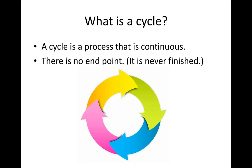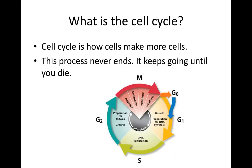So what is a cycle? A cycle is something that is continuous — it's a circle, it's a loop, it never ends. This is really important for the cell cycle because once you reach the end, you're not finished. You have to start over again. The cells that are created at the end of the cycle then go through the cycle themselves. It's a never-ending process that continues until we're no longer alive.